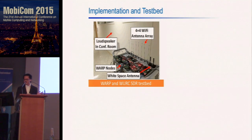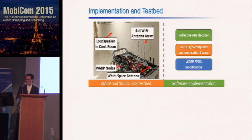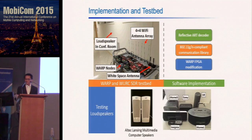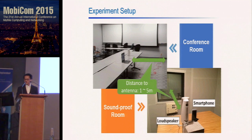We implemented the ART design on the WARP software-defined radio platform using eight antennas and two carrier-synchronized WARP boards. We implemented the reflective ART decoder in our communication library, which can decode Wi-Fi packets in software, and modified the WARP FPGA to extend its sampling duration from 800 microseconds to more than 50 seconds. We tested various brands of loudspeakers, all small in size, and conducted experiments in two environments: a comfort room and a soundproof room, with the loudspeaker inside and the attacker outside, varying distance from one to five meters.